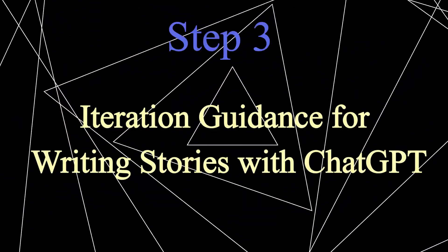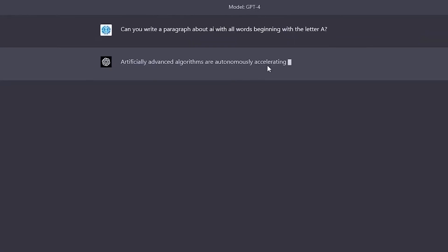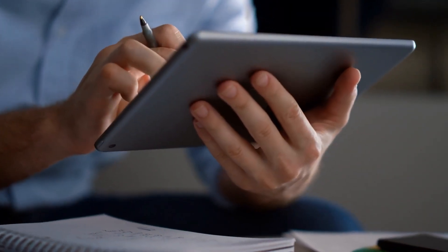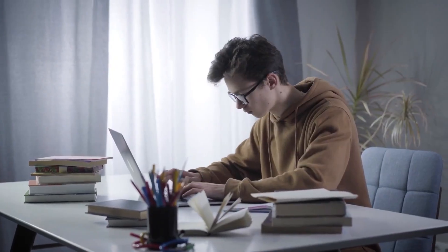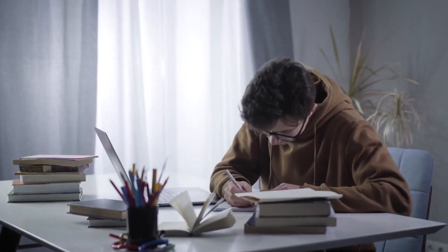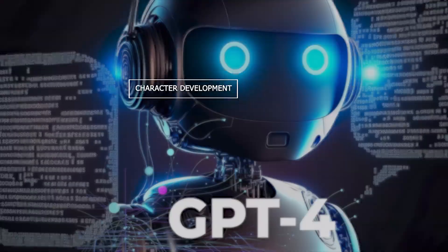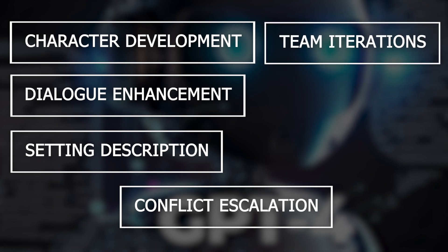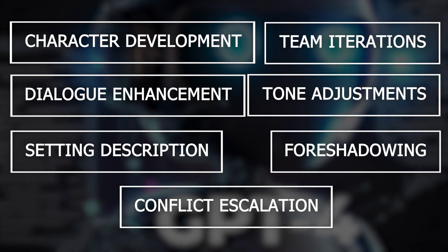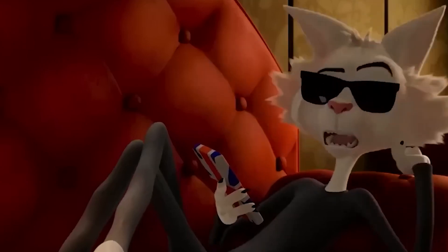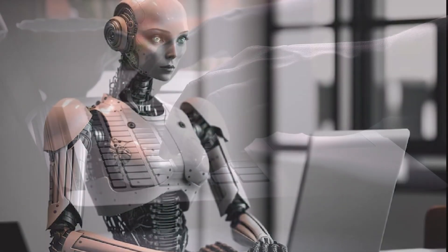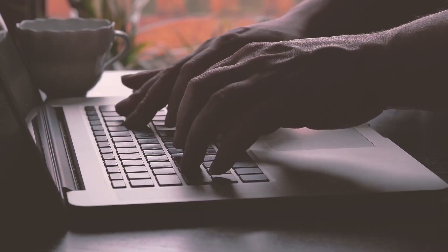Now, to the final step. With ChatGPT by your side, you can take your narrative to new heights of engagement and excellence. Begin by inputting your story into ChatGPT — this allows the system to analyze your content and provide valuable suggestions for improvement. Brace yourself for a wave of creativity as ChatGPT offers insights on character development, dialogue enhancement, setting description, conflict escalation, team iterations, tone adjustments, and even foreshadowing. Character development is key to creating relatable and dynamic individuals. Use ChatGPT's suggestions to deepen your characters, adding layers to their personalities, motivations, and relationships.